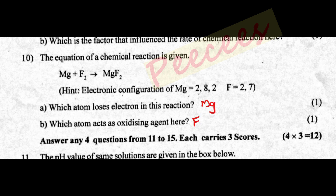Fluorine is the oxidating agent here. Fluorine has configuration 2, 7 — it needs one electron to become stable. Therefore, fluorine (F2) is the oxidating agent in this reaction.